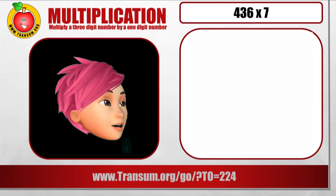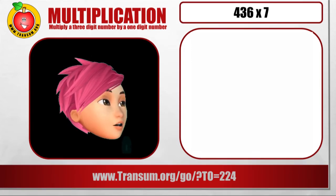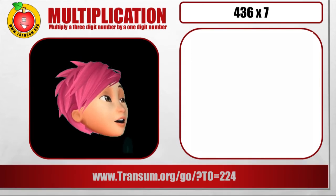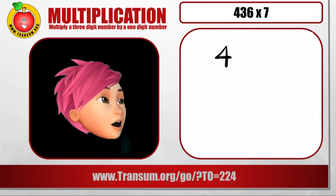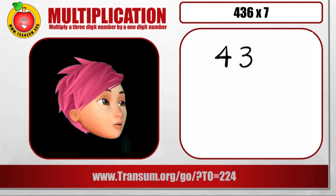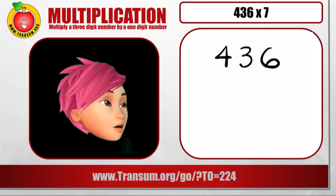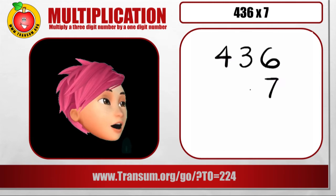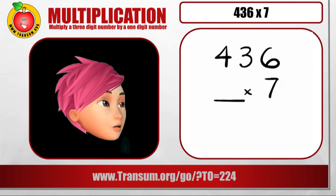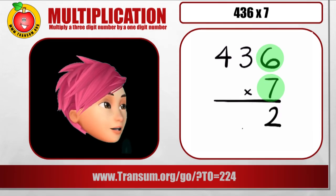Okay, now let's have a look at 436 times 7. No different. Write the 436 at the top with the 7 underneath. And then the first thing you're going to do is multiply the number in the 1's column. So 7 multiplied by 6 is 42. Carry the 4, put the 2 in the line.